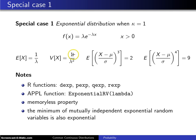The mean is 1 over lambda, the variance is 1 over lambda squared, the skewness is 2, and the kurtosis is 9.